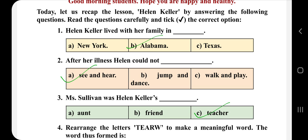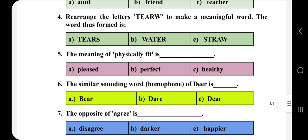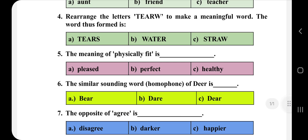Next is: rearrange the letters T-E-A-R-W to make a meaningful word. We check each letter — T, E, A, R, W — and arrange them. The correct word formed is 'water': W-A-T-E-R. Water means paani.